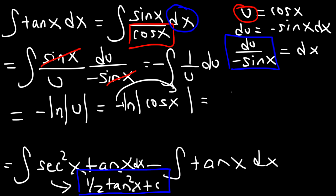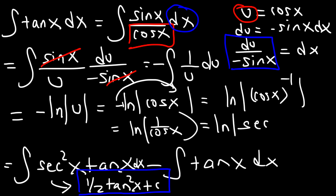That's a property of logs. So this becomes ln cosine x raised to the minus 1 power. And cosine raised to the negative 1 is the same as 1 divided by cosine. And 1 over cosine is secant. So you need to know that the integral of tangent x is ln secant, or ln 1 over cosine. But typically, it's usually written as ln secant, which is what we're going to do in this video.